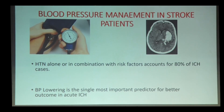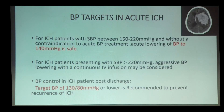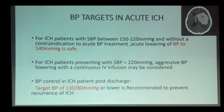The next update is regarding management of blood pressure in stroke patients. Hypertension alone or in combination with risk factors accounts for 80% of ICH. BP lowering is the single most important predictor for better outcome in acute ICH. For patients with systolic blood pressure more than 220, aggressive BP reduction is advised.